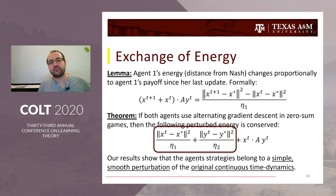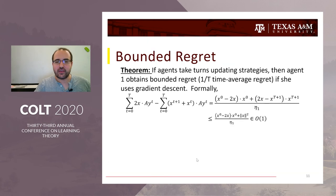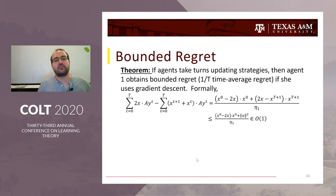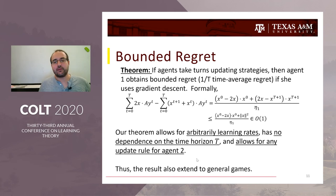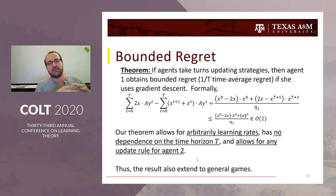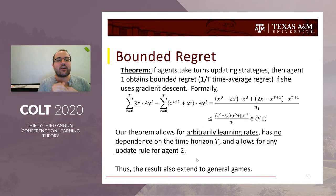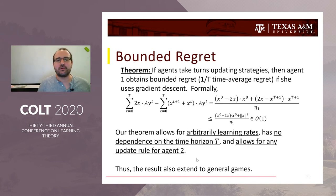This notion of energy allows us to say something about regret. Since the utility exactly describes the change in distance, we can say that if Agent 1 uses this algorithm, she is going to obtain 1 over t time average regret using gradient descent. I want to emphasize this theorem: it makes no stipulation on the learning rate — it has to be fixed, but any fixed learning rate works — and it allows for any update rule for Agent 2, even an adversarial omniscient opponent who wants to maximize your regret.